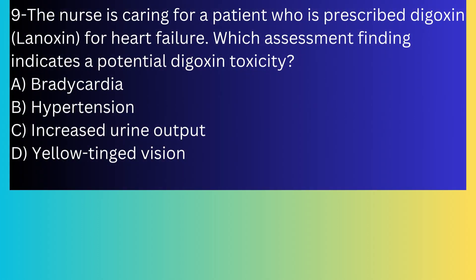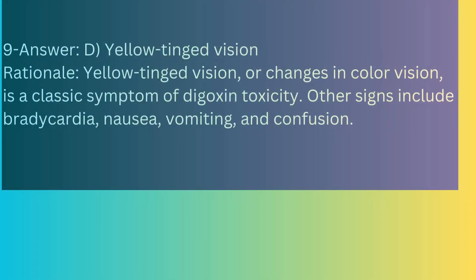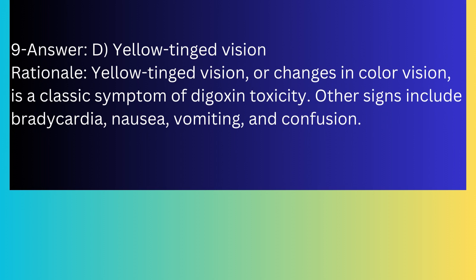Question number nine: The nurse is caring for a patient who is prescribed digoxin (Lanoxin) for heart failure. Which assessment finding indicates potential digoxin toxicity? A) Bradycardia, B) Hypertension, C) Increased urine output, D) Yellow-tinted vision. The answer is D, yellow-tinted vision. Yellow-tinted vision or change in color vision is a classic symptom of digoxin toxicity. Other signs include bradycardia, nausea, vomiting, and confusion.